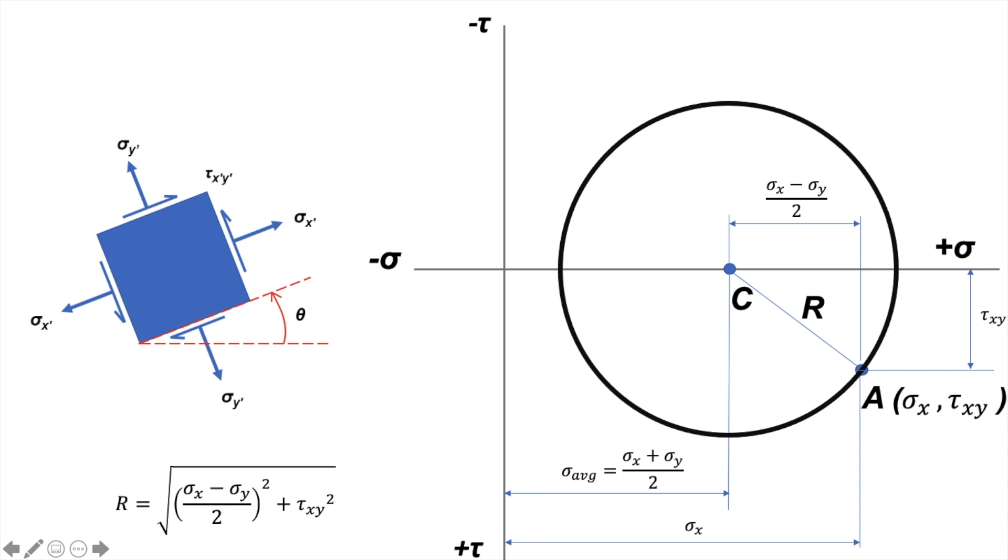Suppose that I rotate my stress element by theta degrees in the anti-clockwise or counter-clockwise direction. So in the Mohr circle, we have to just rotate the line CA about C by a measure of 2 times theta.